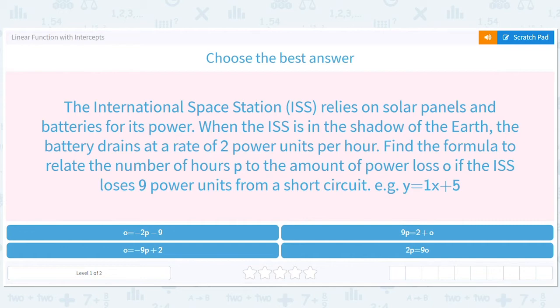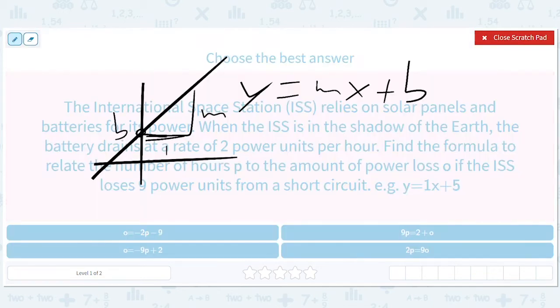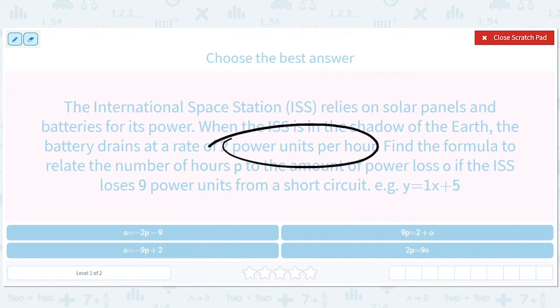So the battery drains at a rate of two per hour, right? So the per hour gives you a sense that that's the slope. The battery drains at two per hour. It drains, so it's going to be negative 2p. So O equals negative 2p. To the amount of power loss if the ISS loses nine power units from a short circuit.